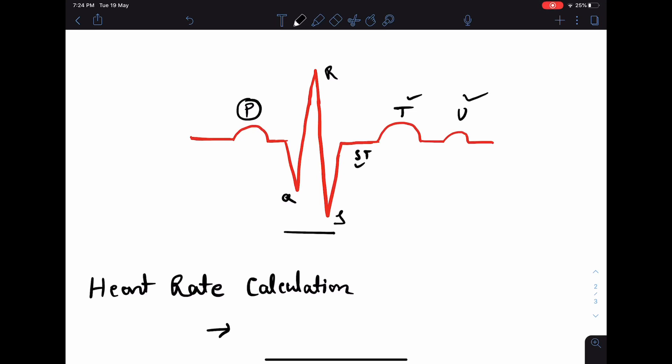There are also two intervals in ECG. One is PR interval, one is QT interval. PR interval starts from the beginning of the P wave up to the beginning of QRS complex. And QT interval starts from the beginning of the Q wave up to the end of T wave. And ST segment is the segment between the end of the S wave up to the beginning of the T wave.